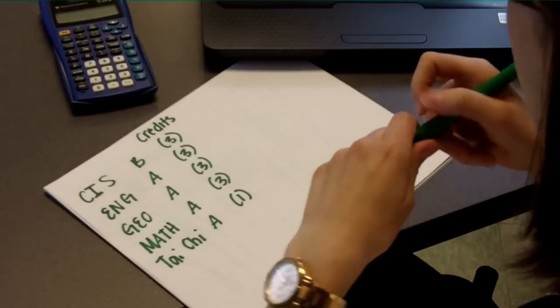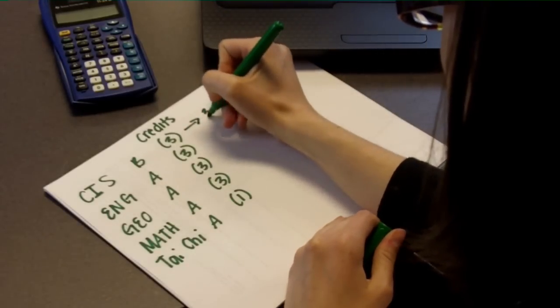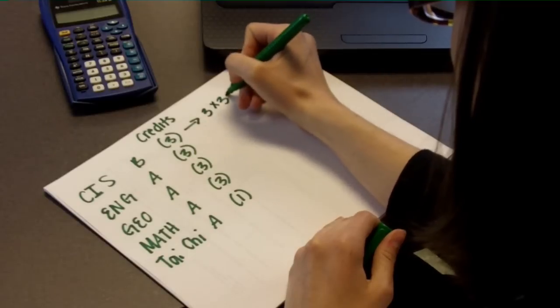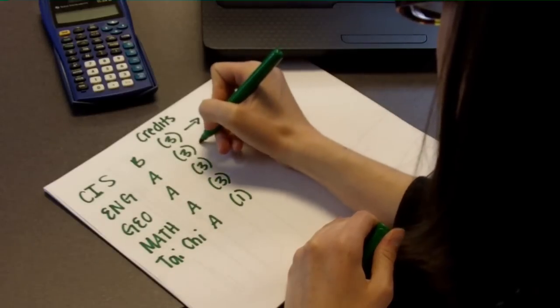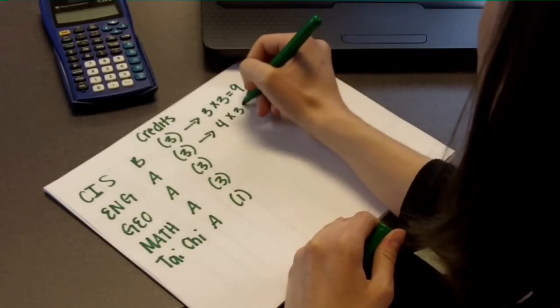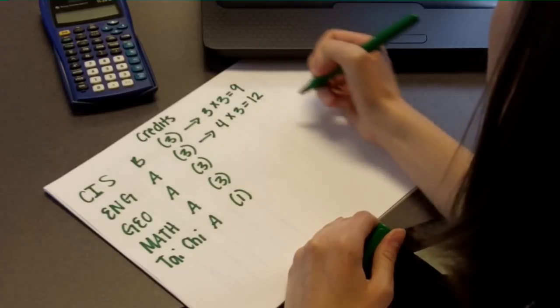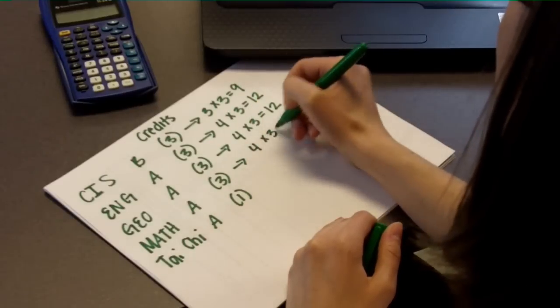So if you had a 3 credit CIS class and you got a B, then you would multiply 3 quality points by 3 college credits to get a total of 9 quality points for the class. If you also had a 3 credit English class and you got an A, then you would multiply 4 quality points by 3 college credits to get 12 total quality points for that class. You would do that same calculation for each of your classes.